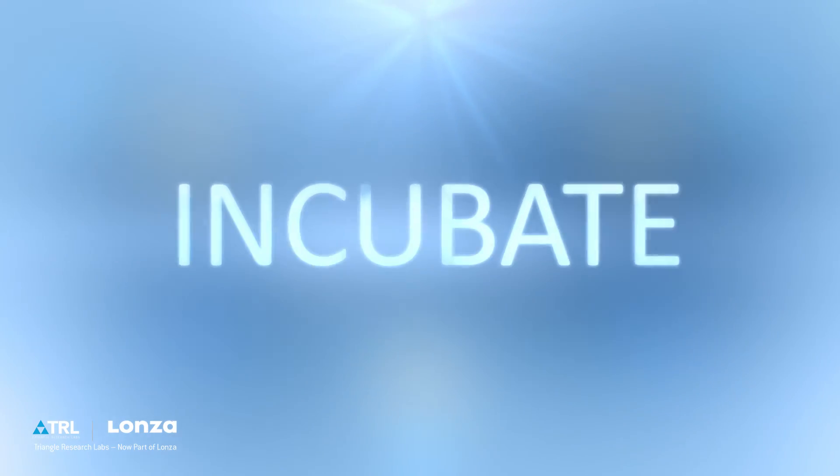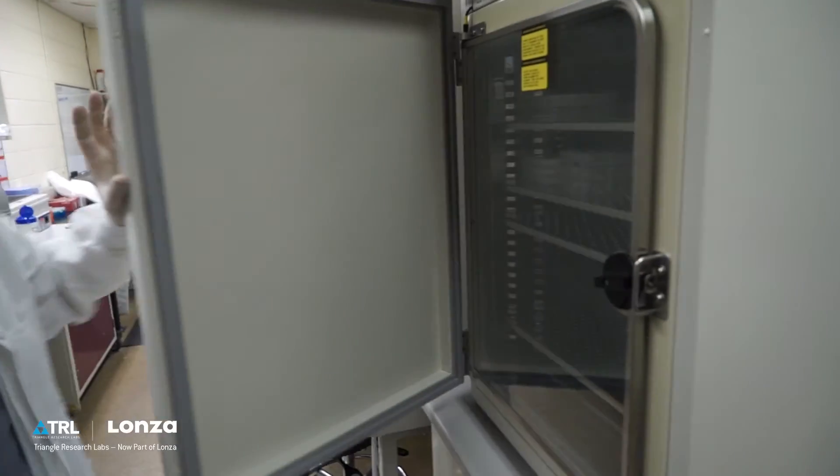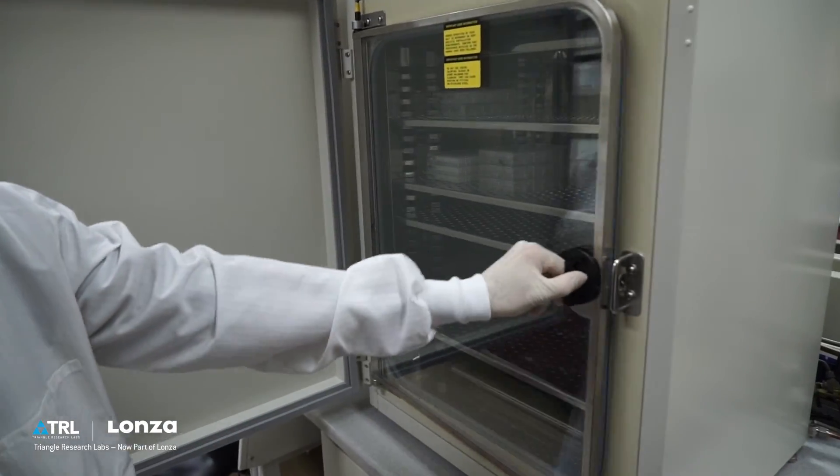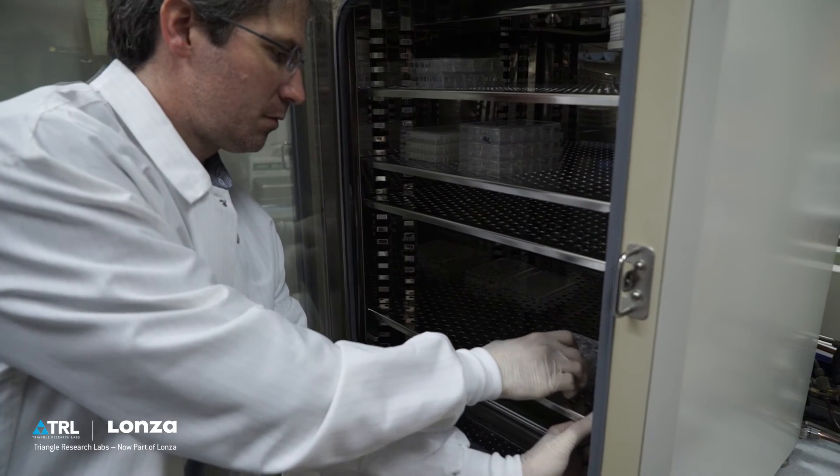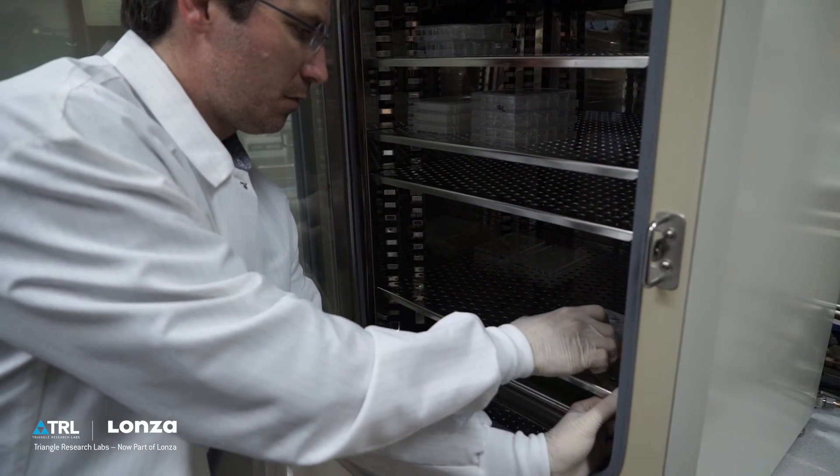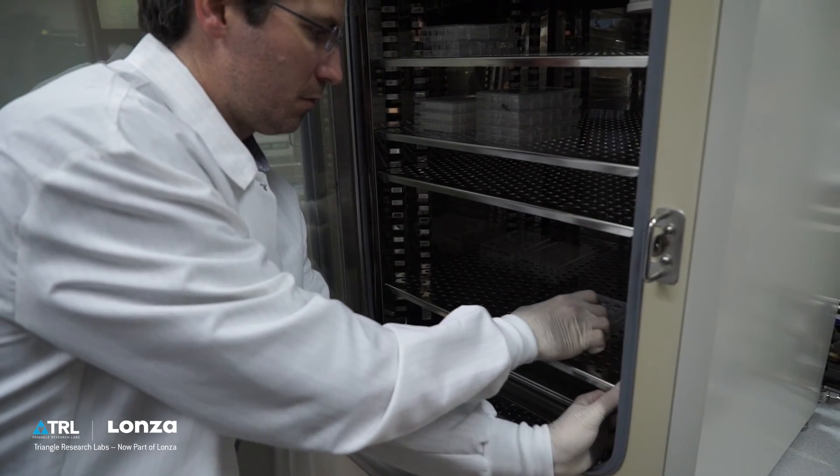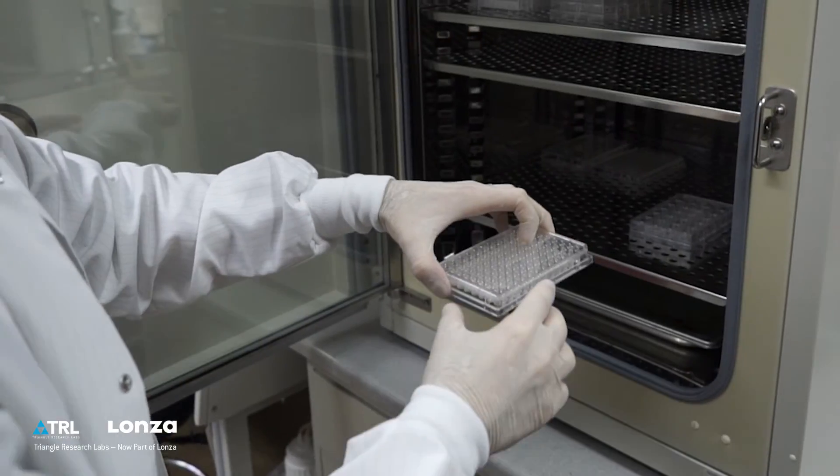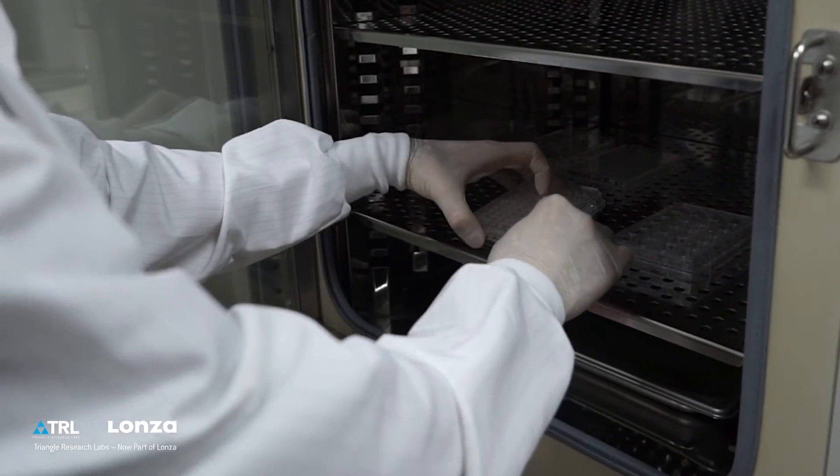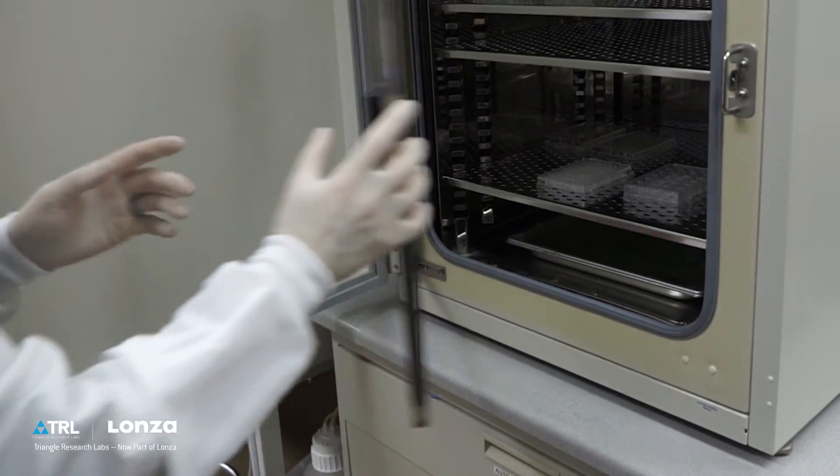Incubate. Place plate in the incubator. Disperse the cells by placing your hands on top of the plate and moving it in a north-south-east-west motion. Repeat the shaking motion at 15, 30, and 45 minutes post-seeding. It is important to note that a 96-well plate must be carefully placed into the incubator area and does not require any shaking.